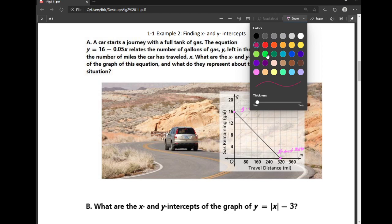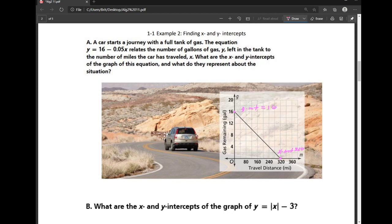So, the easiest way is actually just to plug in zeros. So if you notice, on the x-axis, the y value is zero. So to find my x-intercept, I'm just going to plug in zero for y.